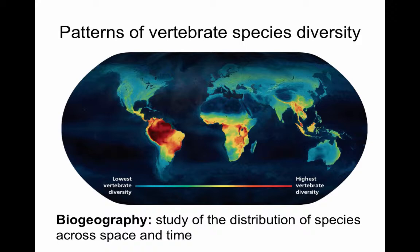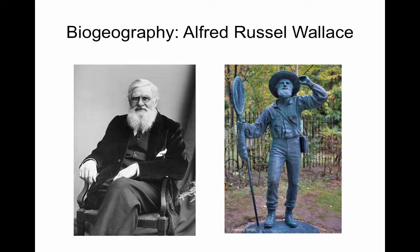Part of our discussion today is about biogeography — the study of the distribution of species across space and time. This is a field coined by one of the co-discoverers of evolution, Alfred Russel Wallace, who discovered it at the same time as Darwin. He was perhaps the greatest field biologist of the 19th century. After 10 years of collecting beetles and butterflies in the Amazon, on his ship back home to England with crates full of samples, his ship caught fire and sank. He was rescued, but he lost hundreds of thousands of pounds worth of samples. What did he do after this loss?